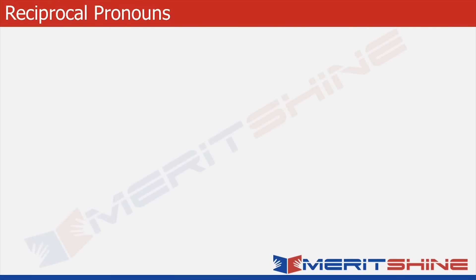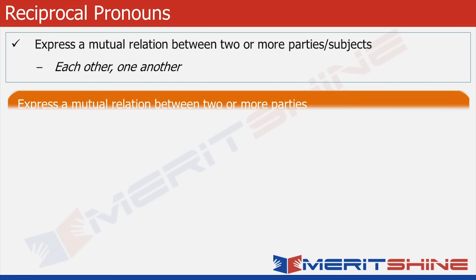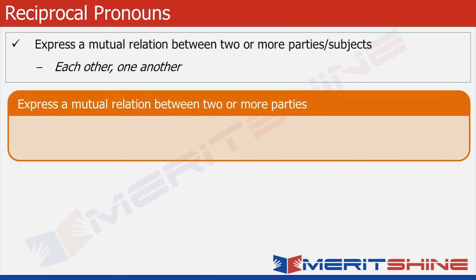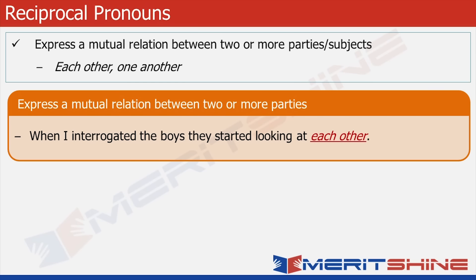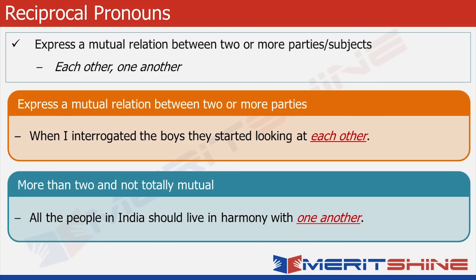Let's move to reciprocal pronouns. They express a mutual relation between two or more parties or subjects. 'Each other' is used for a group of two or more expressing a mutual relationship between the members. When I interrogated the boys, they started looking at each other. 'One another' is used for a group of more than two expressing not exactly a one-on-one mutual relationship. All the people in India should live in harmony with one another.